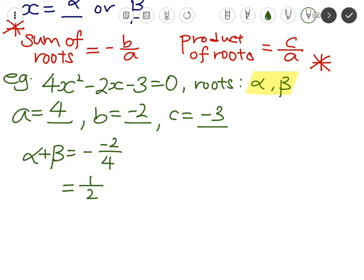Next, we know that since the roots are alpha and beta, the product of roots will be just alpha multiplied by beta itself. In this case, it'll be c over a, which is negative 3 over 4, which also gives you negative 3 quarters.